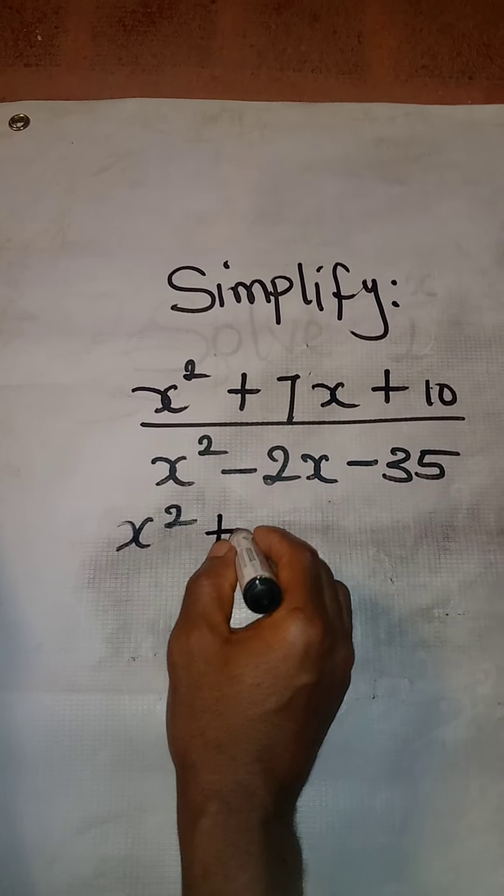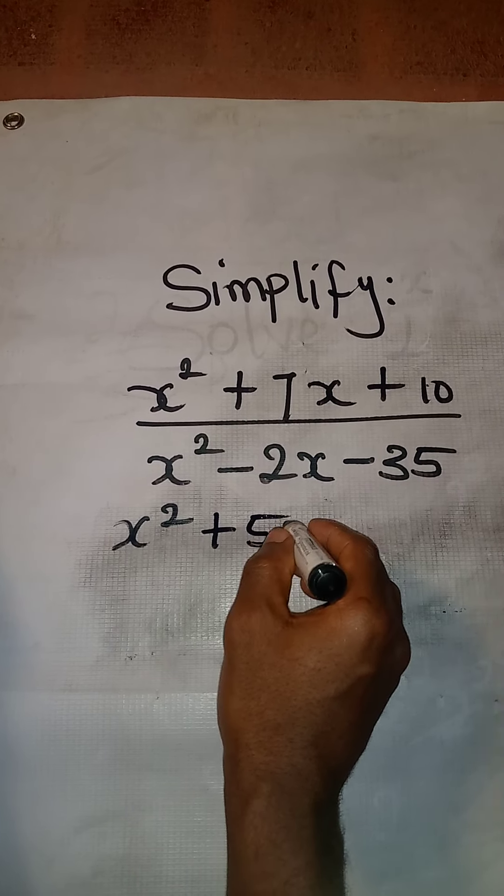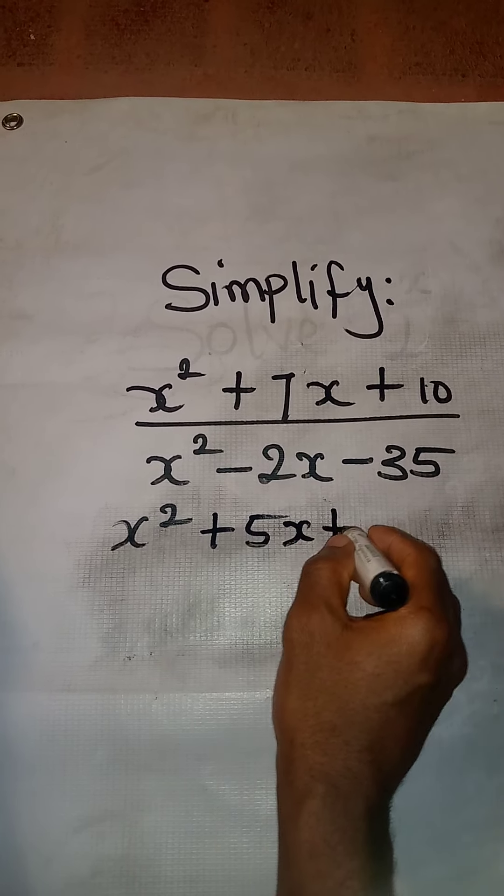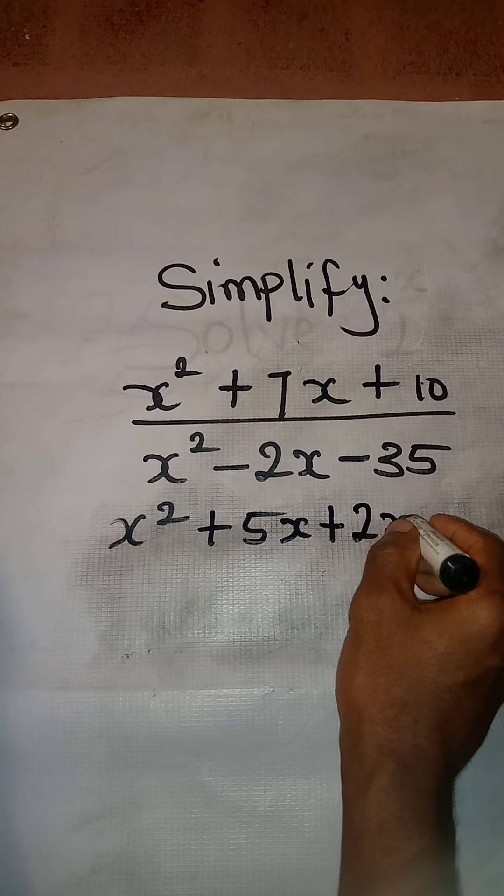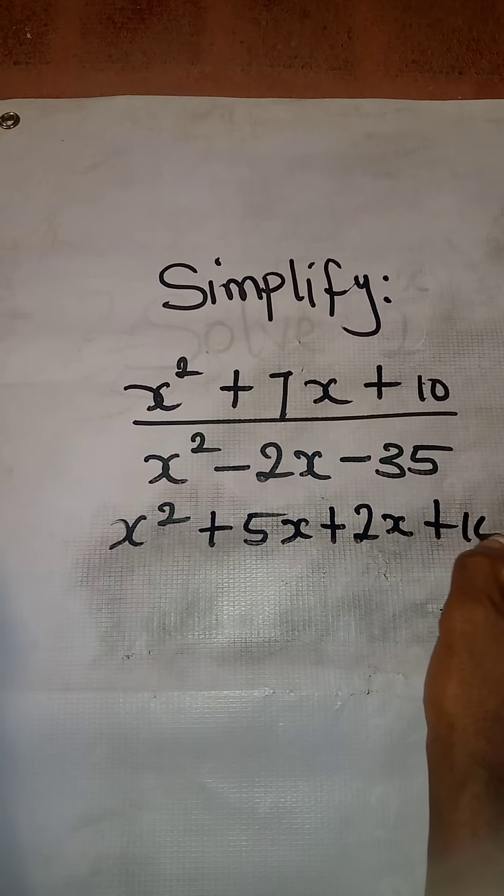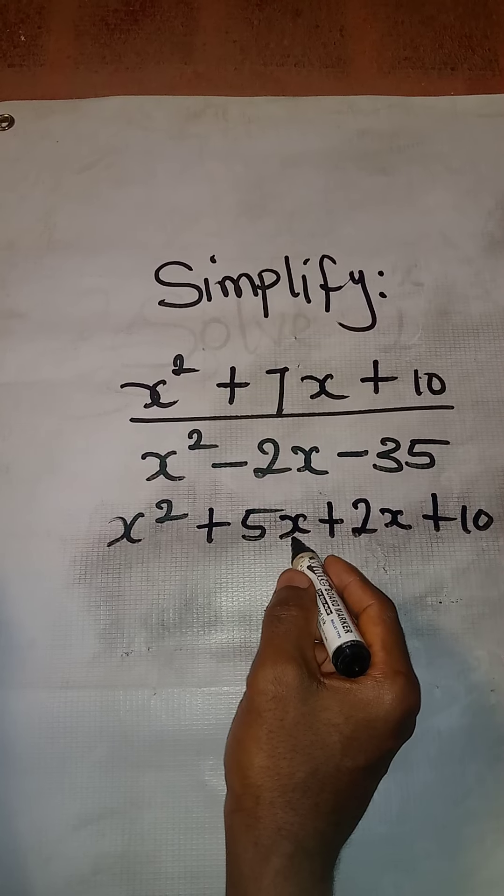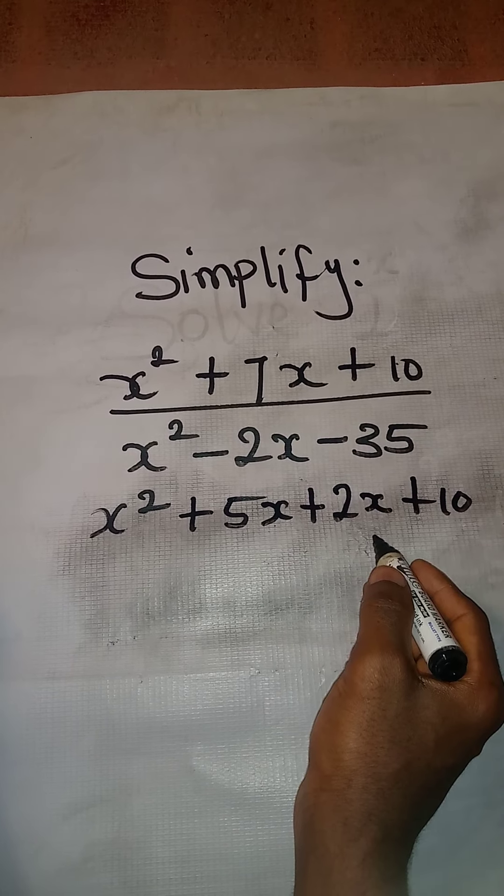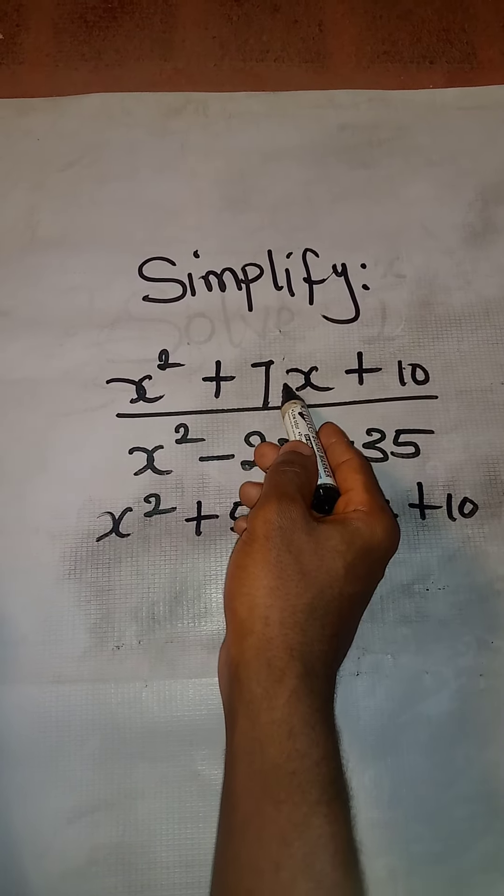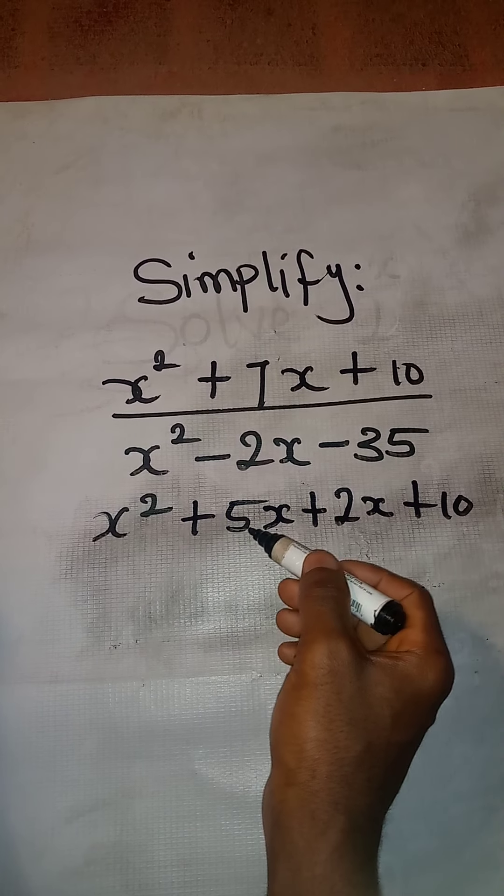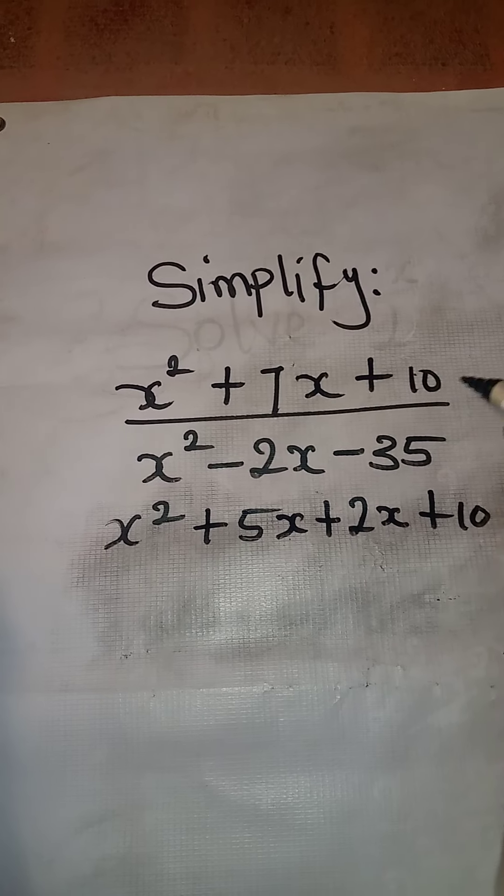So here will be plus 5x then plus 2x plus 10. So that if you say 5x plus 2x, you are going to have 7x. And then 5 times 2 will give you this 10, which came down here.